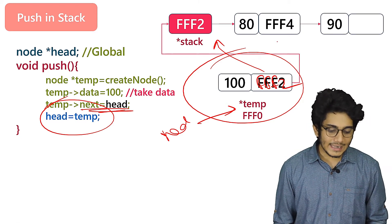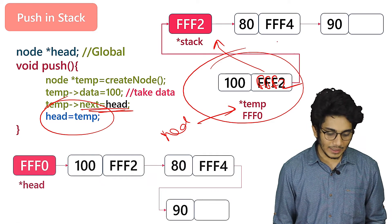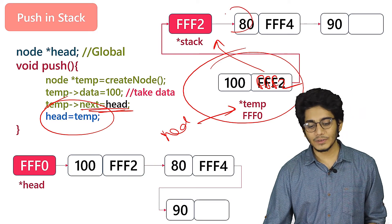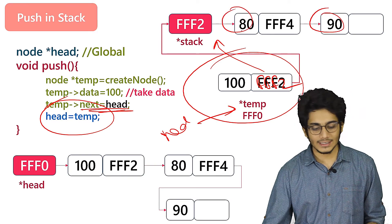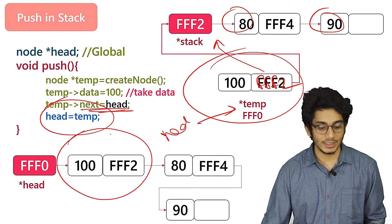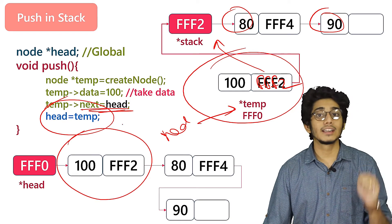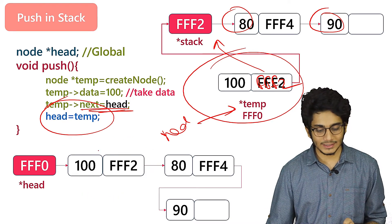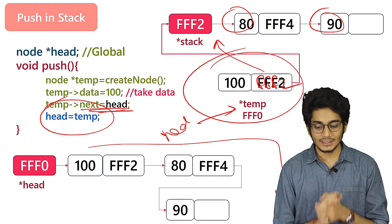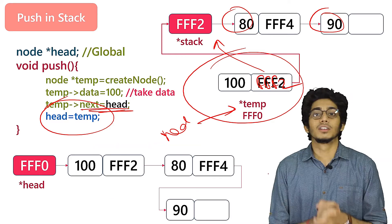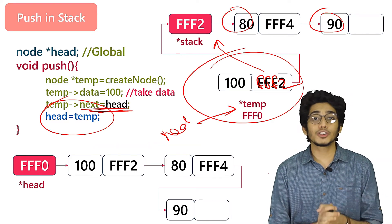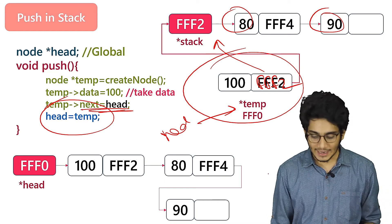Our head or stack will be pointing to temp, and this is how we can insert anything at the first position of a singly linked list. The updated stack will be: previously we had 80 and 90, and now we have successfully pushed 100 into the list. This is how we can perform the push operation using linked list into stack.